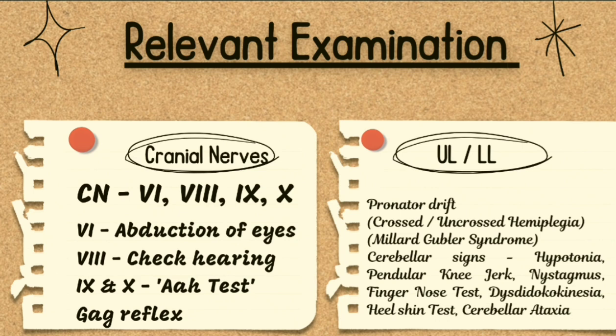For upper or lower limb examination, pronator drift is very important. Ask the patient to stretch both arms with palms facing the ceiling, then close the eyes — within a few seconds you can assess the weaker side. Pronator drift can only be performed if power is at least 3 or 3+. By assessing power via pronator drift, you can determine whether it is crossed or uncrossed hemiplegia, as it can be part of Millard-Gubler syndrome — ipsilateral palsy of the 6th and 7th cranial nerves with contralateral hemiplegia.